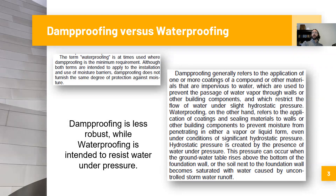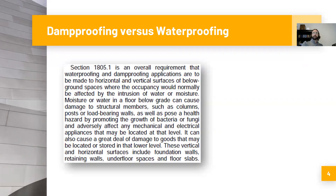Damp proofing versus waterproofing — what's the difference? They're not exactly the same. To keep it simple, damp proofing is less robust, and waterproofing is intended to resist water under pressure — meaning hydrostatic pressure. A good way to think about damp proofing is the type of treatment you need on the foundation in the absence of hydrostatic pressure. The code commentary does note that damp proofing can resist slight hydrostatic pressure, but the code establishes criteria for how you determine whether a hydrostatic water condition exists, which will inform whether you need to damp proof or waterproof your foundation walls.